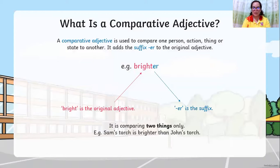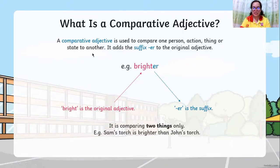So what is a comparative adjective? A comparative adjective is used to compare one person, action, thing, or state to another. It adds the suffix -er to the original adjective.